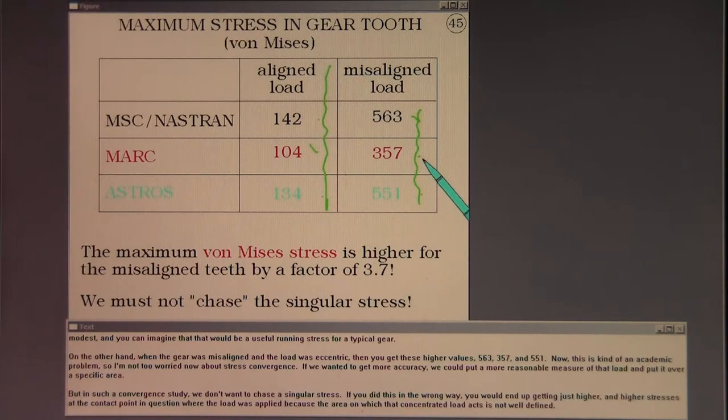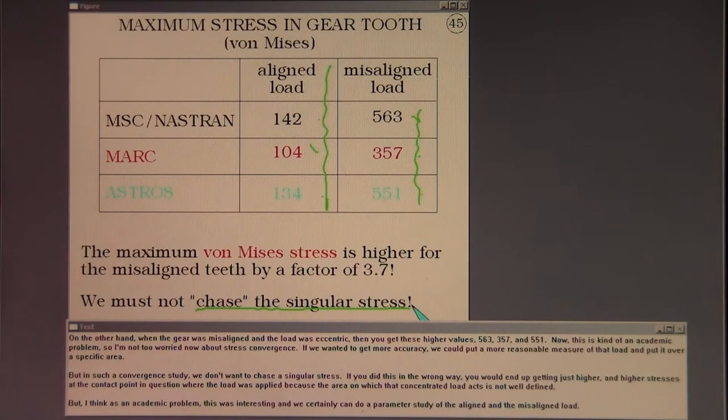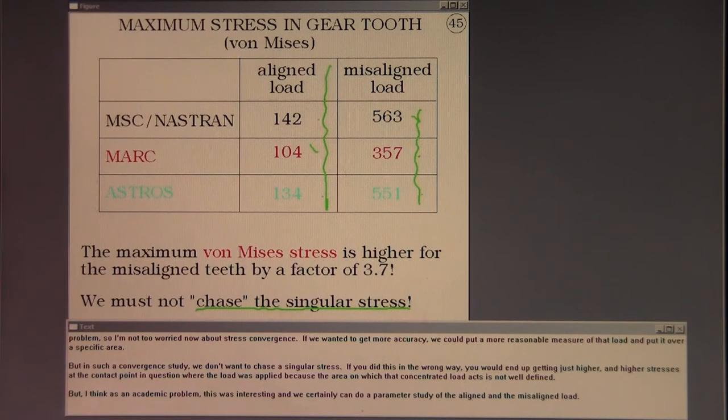Now this is kind of an academic problem, so I'm not too worried right now about stress convergence. If we wanted to get more accuracy, we could put a more reasonable measure of that load and put it over a specific area. But in such a convergence study, we don't want to chase a singular stress. If you did this in the wrong way, you would end up getting just higher and higher stresses at the contact point in question where the load was applied, because the area on which that concentrated load acts is not well defined. But I think as an academic problem, this was interesting and we certainly can do the parameter study of the aligned and the misaligned load.